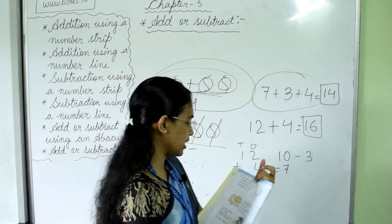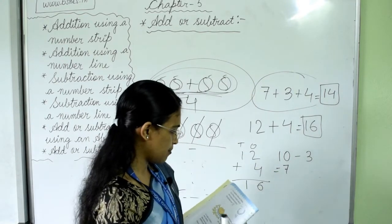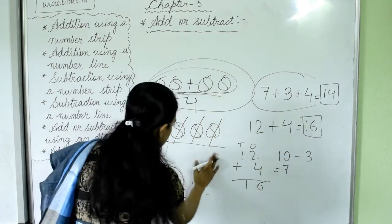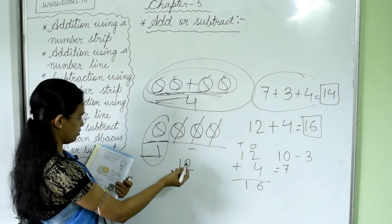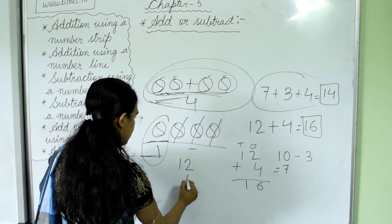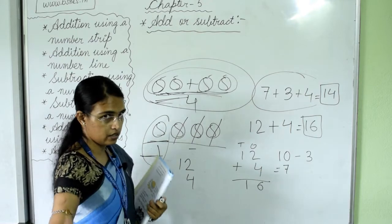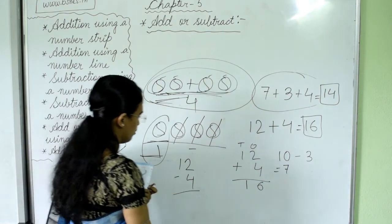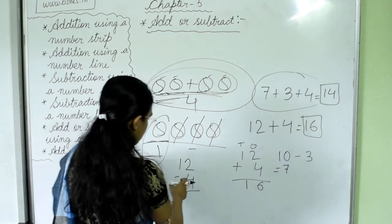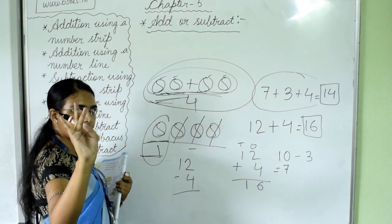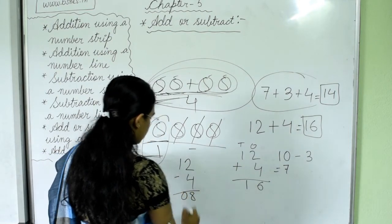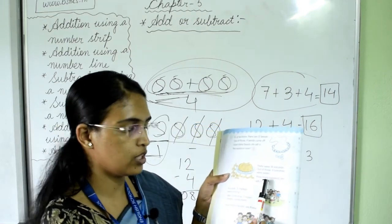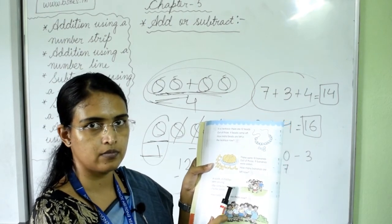Next question: in a necklace there are 12 beads and 4 beads came off — came off means subtraction. So 12 minus 4 equals 8. Write 8 here. The remaining two questions are your homework — do them at home.